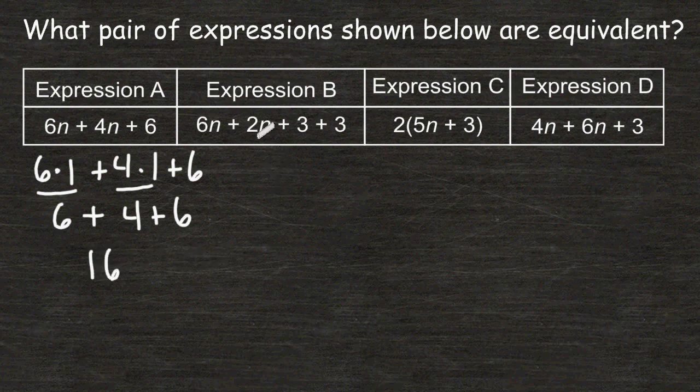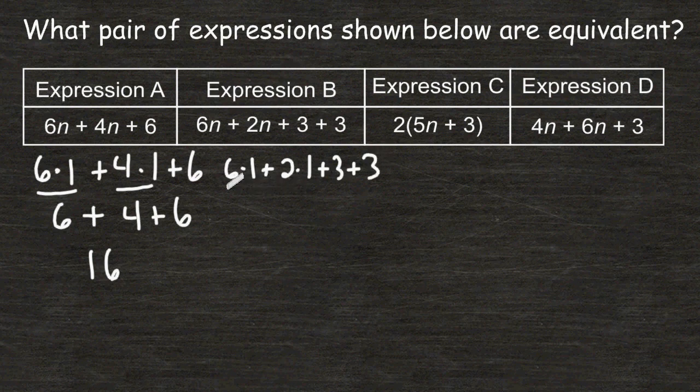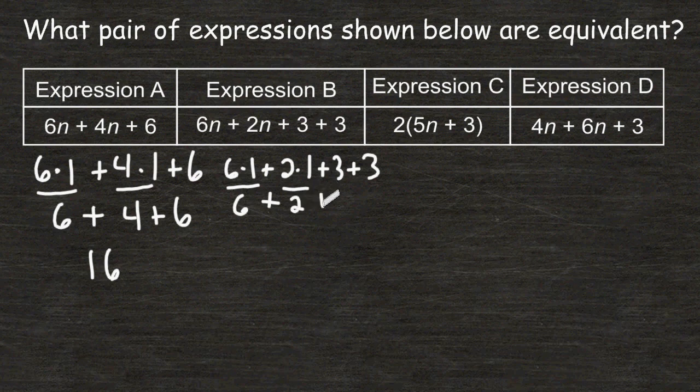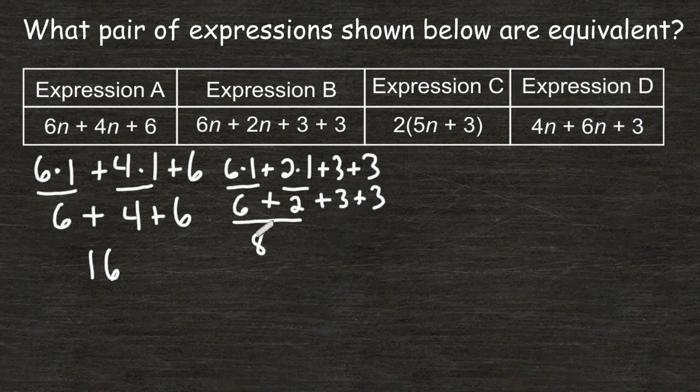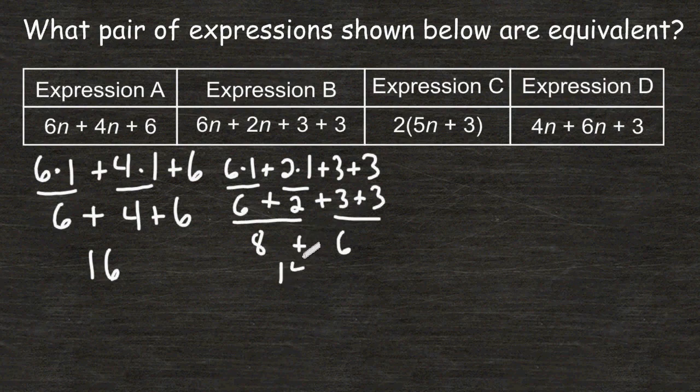Now let's plug the number 1 in for expression B. So the first part of our expression is 6 times n, so we're going to change that to 6 times 1, plus 2 times n which we will change to 2 times 1, then we have to add 3 a couple of times at the end. 6 times 1 is 6, plus 2 times 1 is 2, and then we have to add a 3 and another 3. 6 plus 2 is 8, 3 plus 3 is 6, and 8 plus 6 is 14. So we definitely know that expressions A and B are not equal to each other.